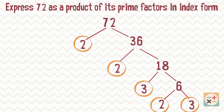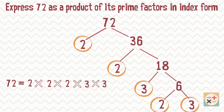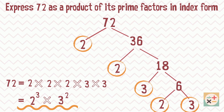Next, we write out the prime factors in order from the smallest prime factor to the largest. Then we can simplify this using powers. We have now listed the prime factors of 72 in index form.